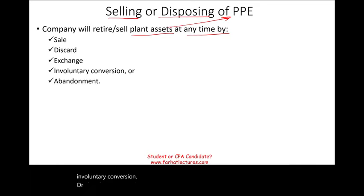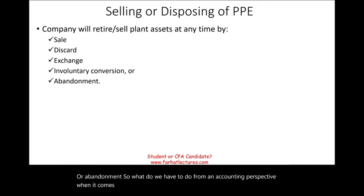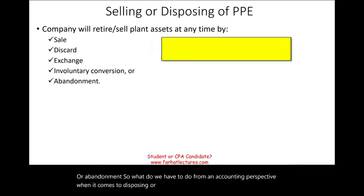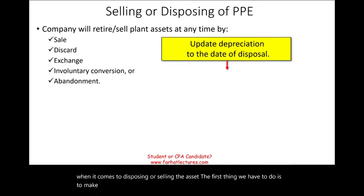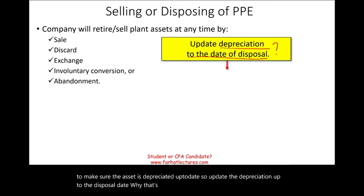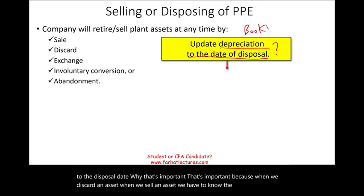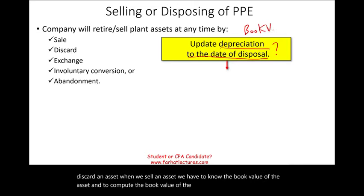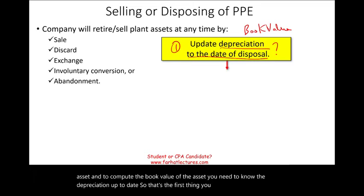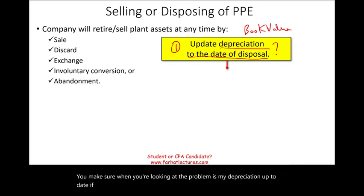From an accounting perspective when disposing or selling an asset, the first thing we have to do is make sure the asset is depreciated up to date — update the depreciation up to the disposal date. This is important because when we discard or sell an asset, we need to know the book value. To compute the book value, you need depreciation up to date. Make sure when looking at the problem that your depreciation is current; if not, bring it up to date.